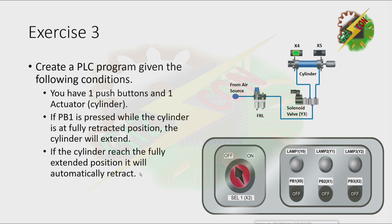Exercise 3. Create a PLC program given the following conditions. You have one push button and one actuator. If PB1 is pressed while the cylinder is at the fully retracted position, the cylinder will extend. If the cylinder reaches the fully extended position, it will automatically retract.